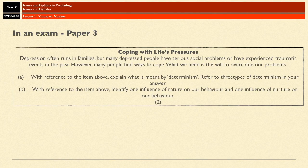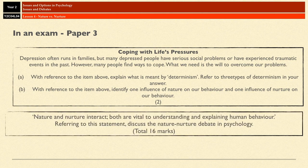So here's a nice little application question: refer to three types of determinism in your answer, referencing the stem. Also, identify one influence of Nature on our behaviour and one influence of Nurture on our behaviour, again referencing the stem. Application questions are very common in this type of topic. You've also got 16-mark essays that are fairly likely to come your way if this topic comes up.